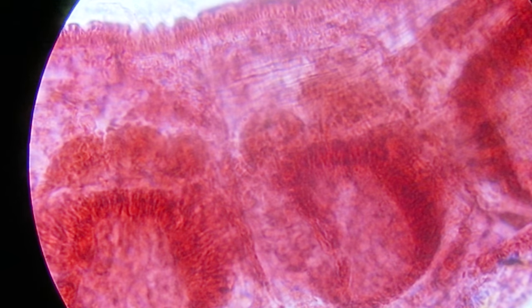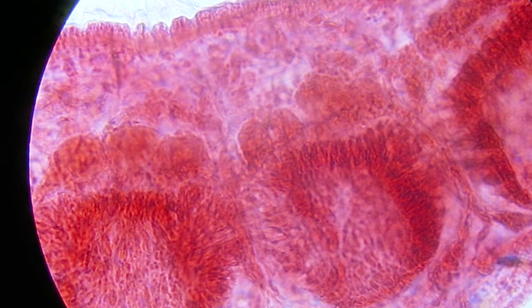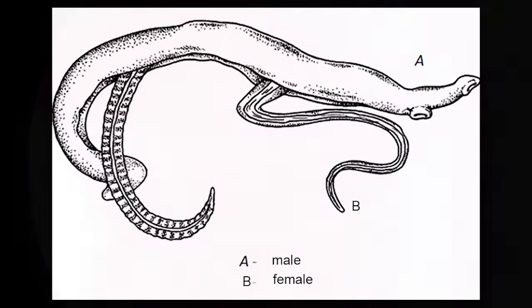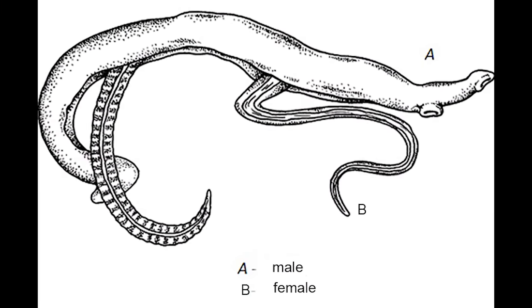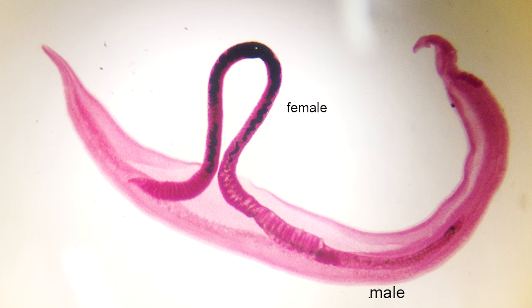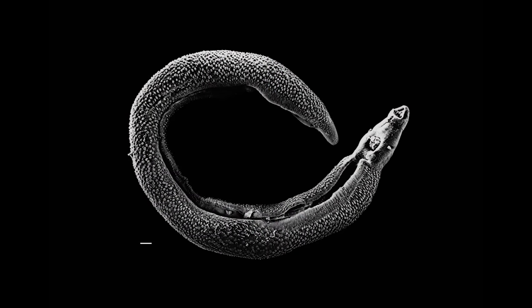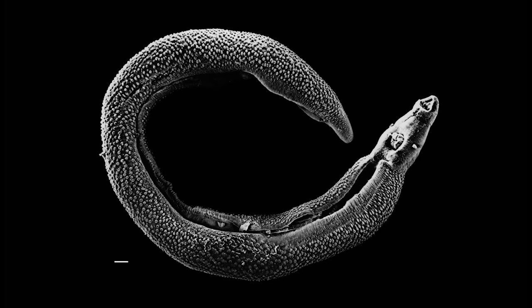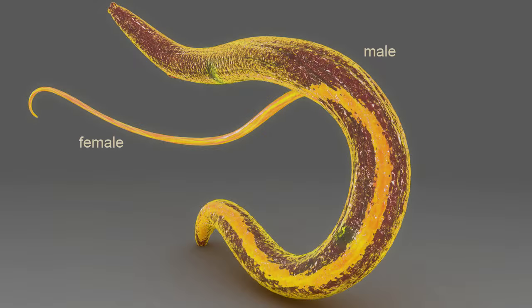The male surrounds the female and encloses her within his gynecophoric canal for the entire adult lives of the worms. As the male feeds on the host's blood, he passes some of it to the female. The male also passes on chemicals which complete the female's development, whereupon they will reproduce sexually. Although rare, sometimes mated schistosomes will divorce, wherein the female will leave the male for another male. The exact reason is not understood, although it is thought that females will leave their partners to mate with more genetically distant males. Such a biological mechanism would serve to decrease inbreeding, and may be a factor behind the unusually high genetic diversity of schistosomes.